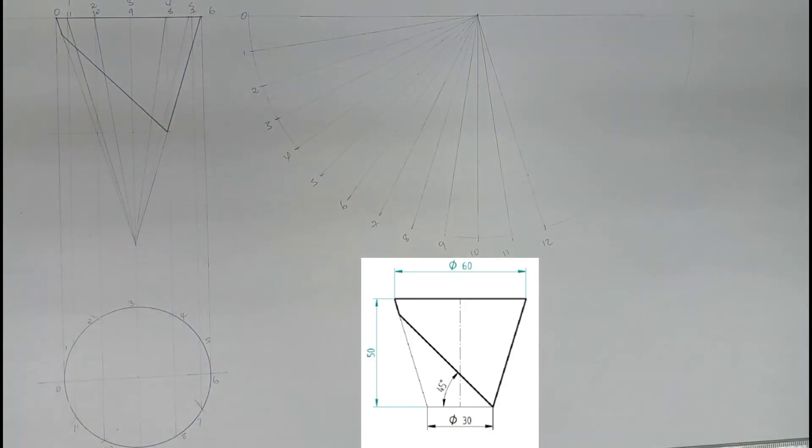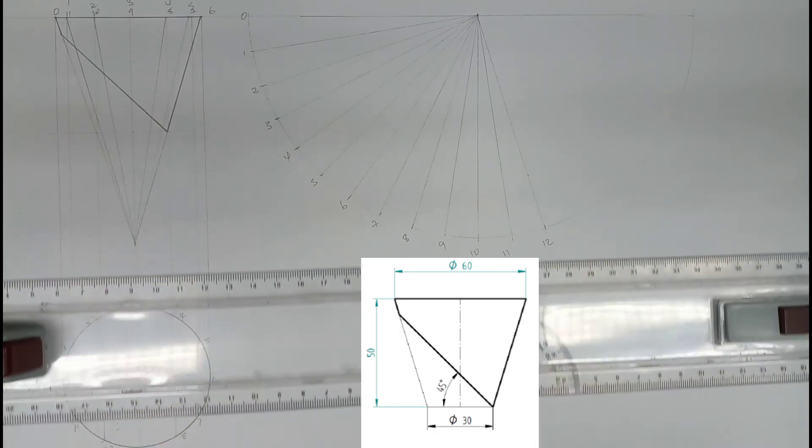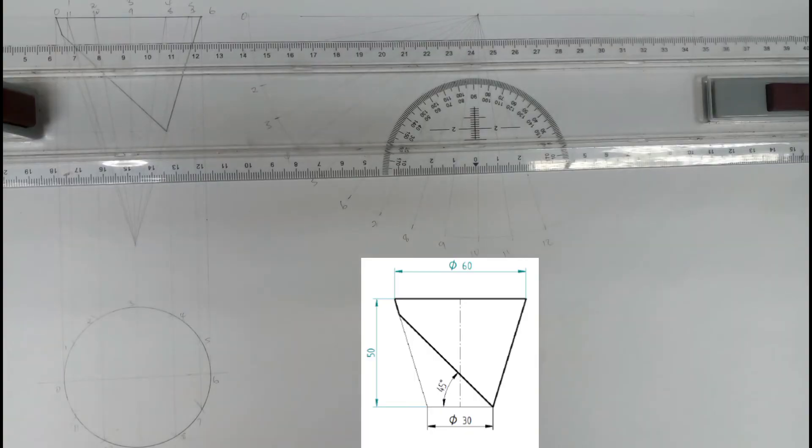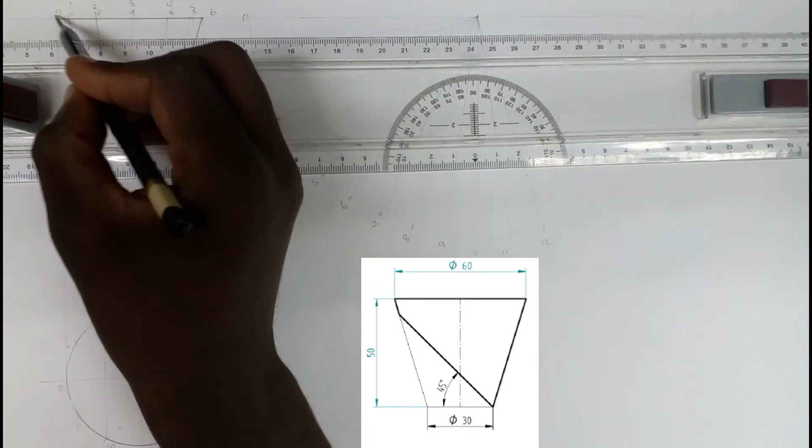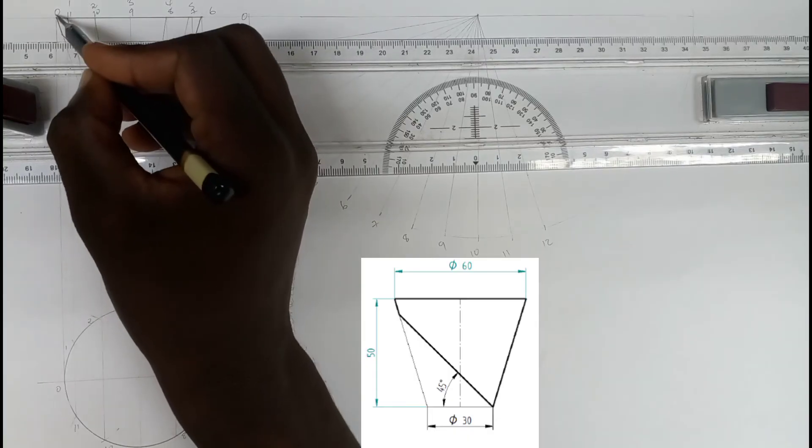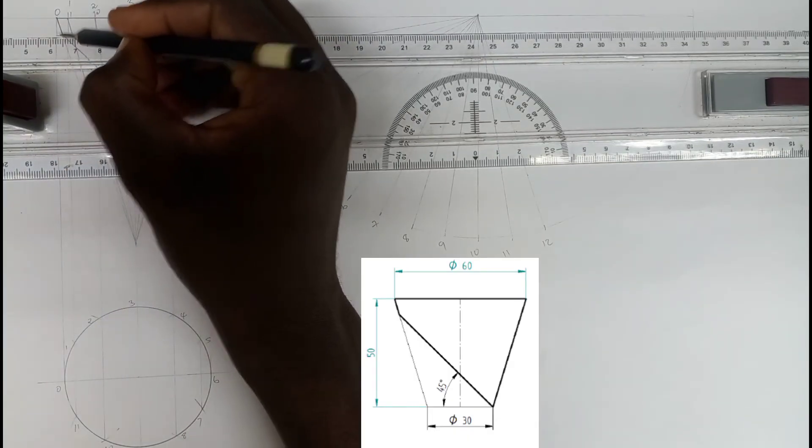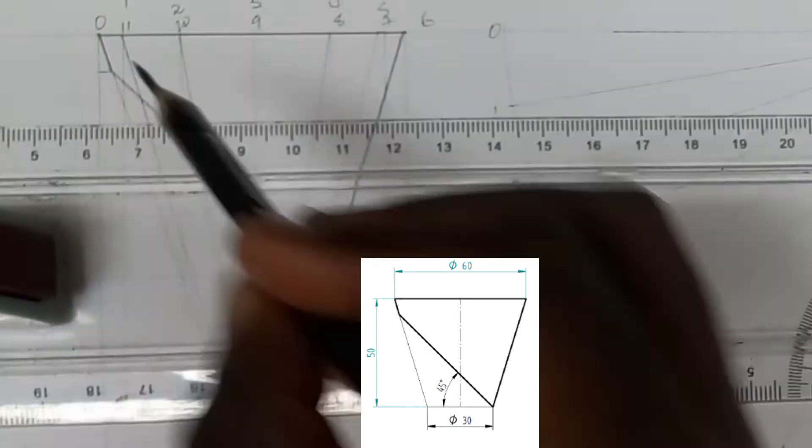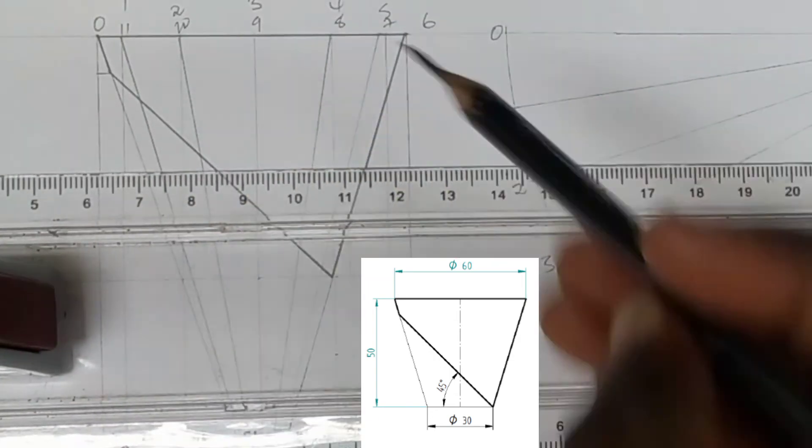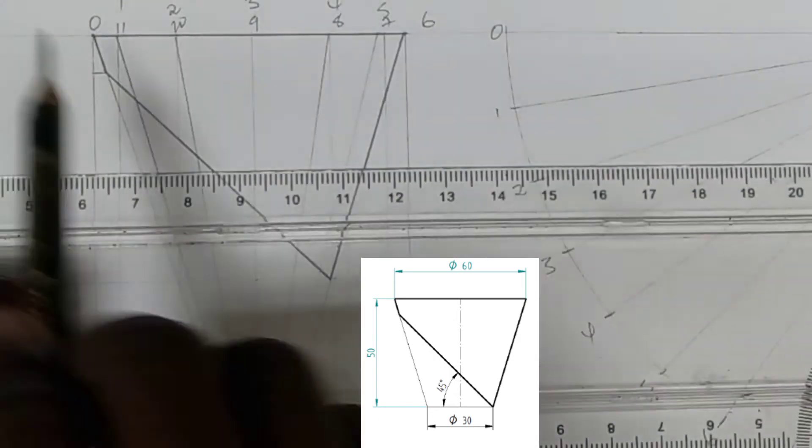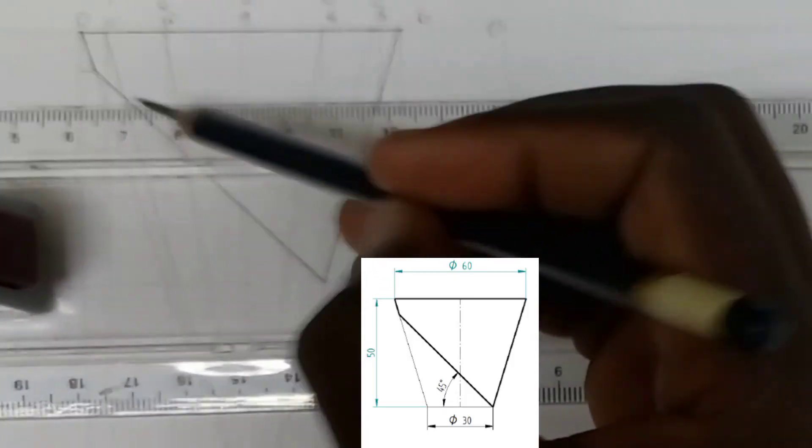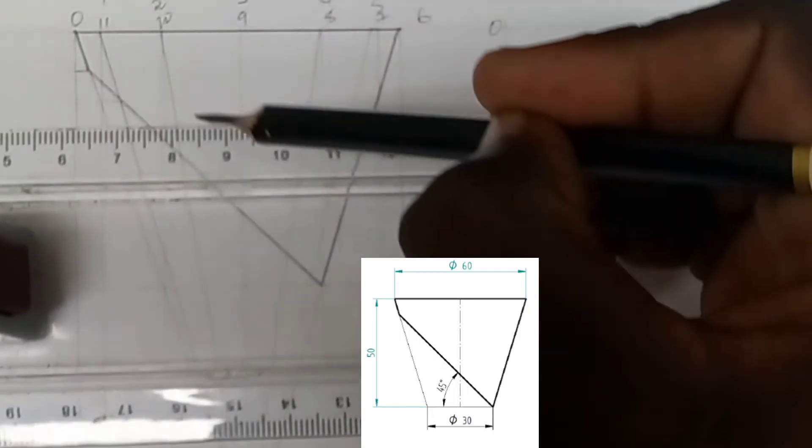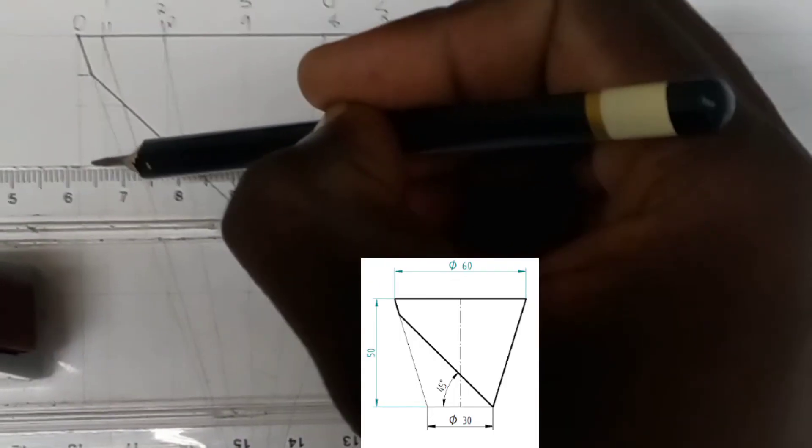Then you draw vertical lines from the points. From point 0, draw a vertical line. Then at the point where this line intersects the edge of the cone, draw a vertical line. You do that on 2 and 10.